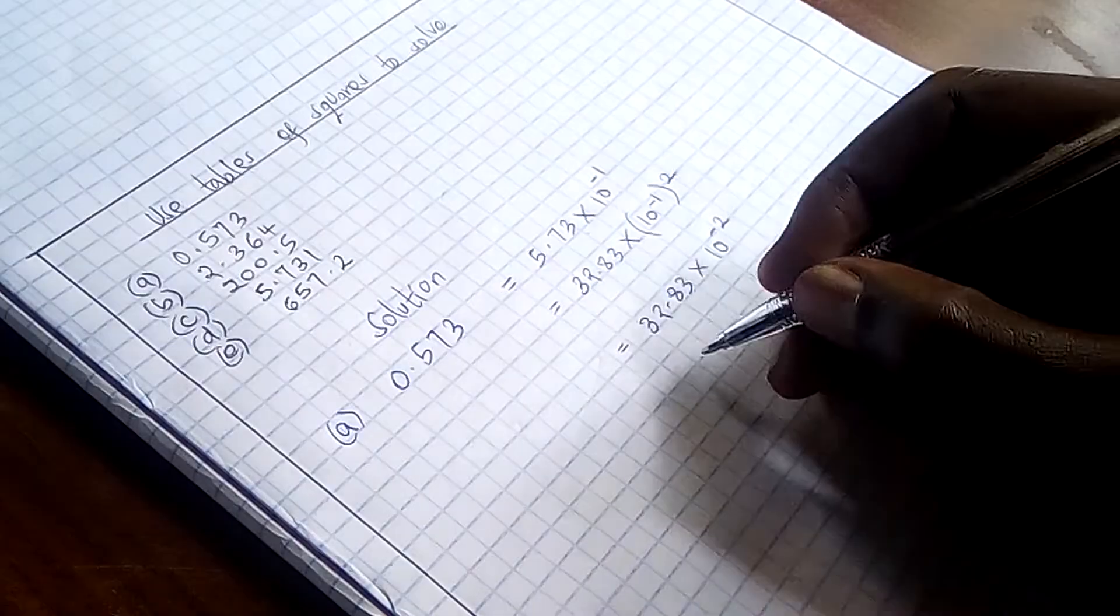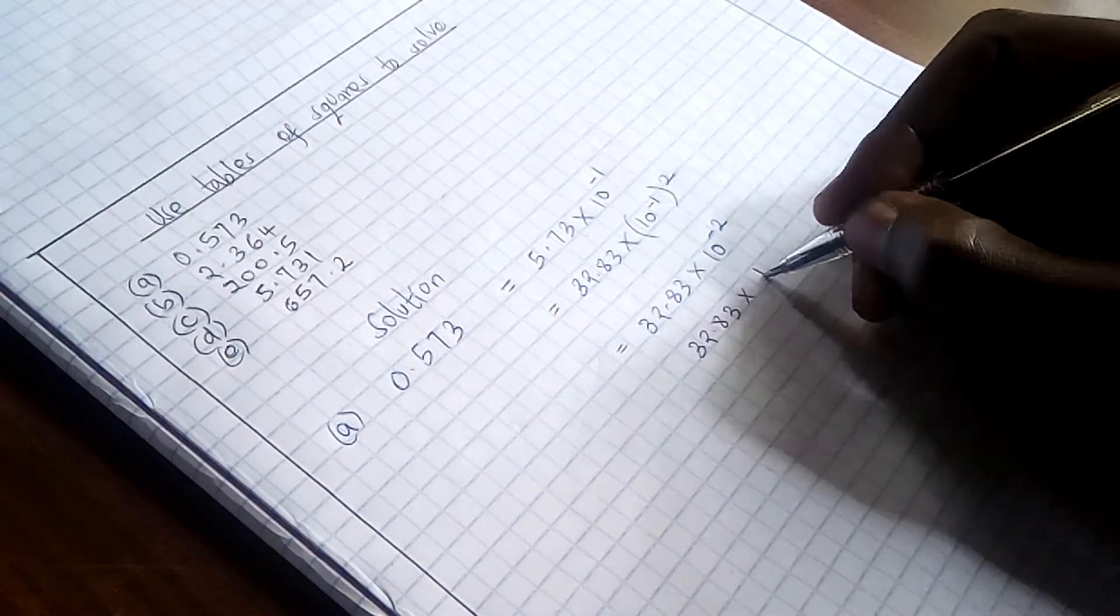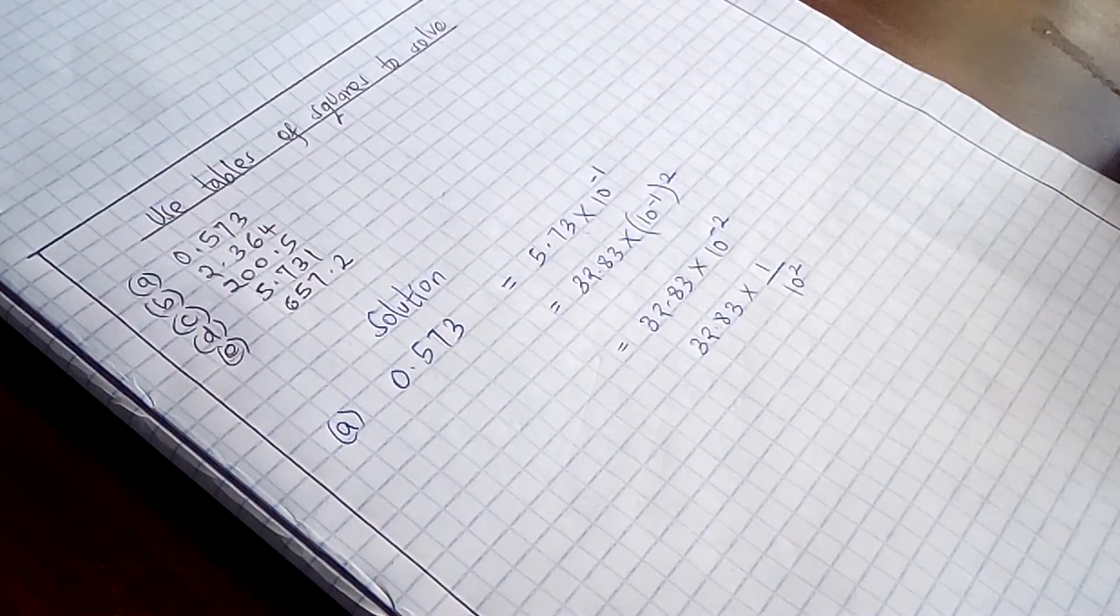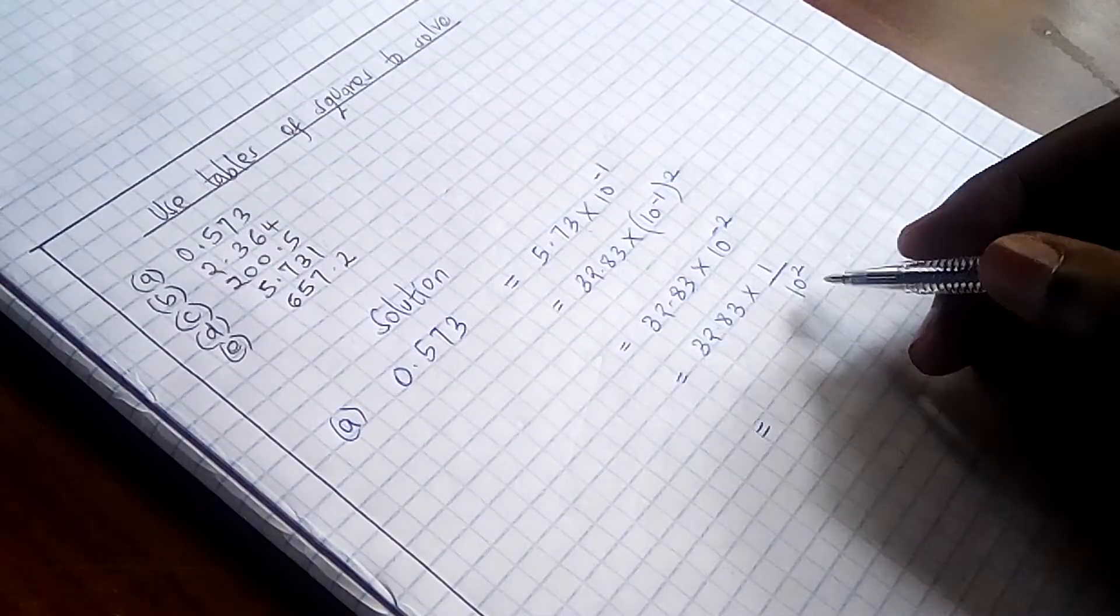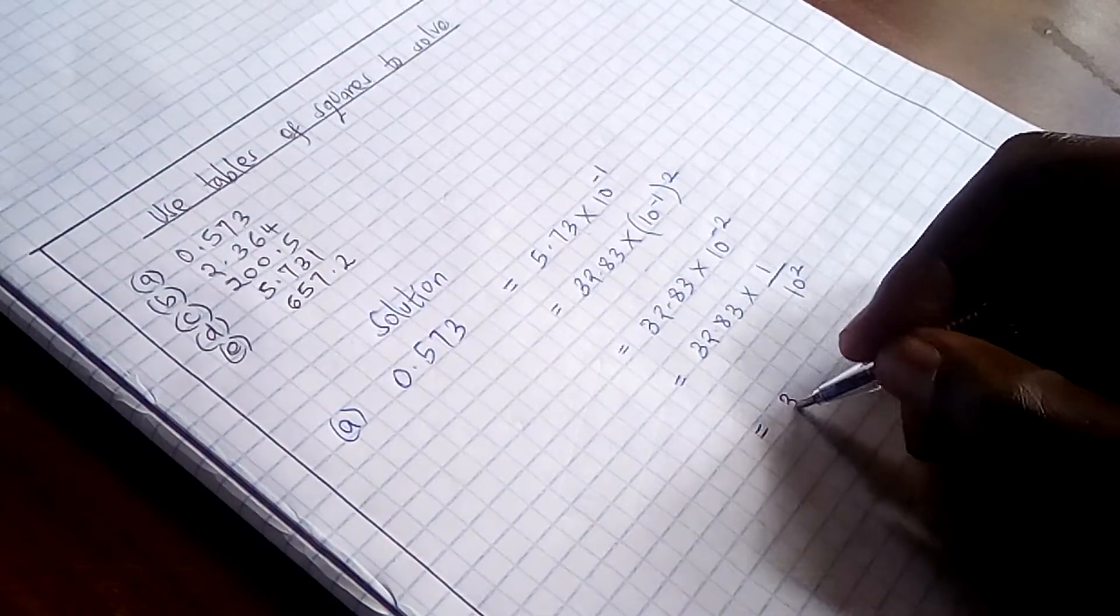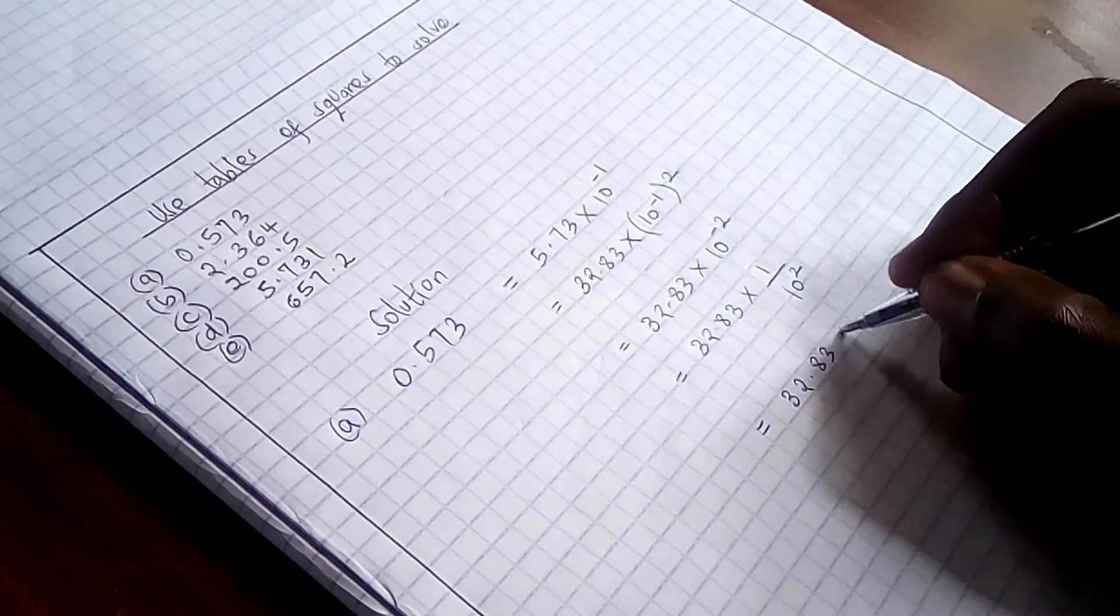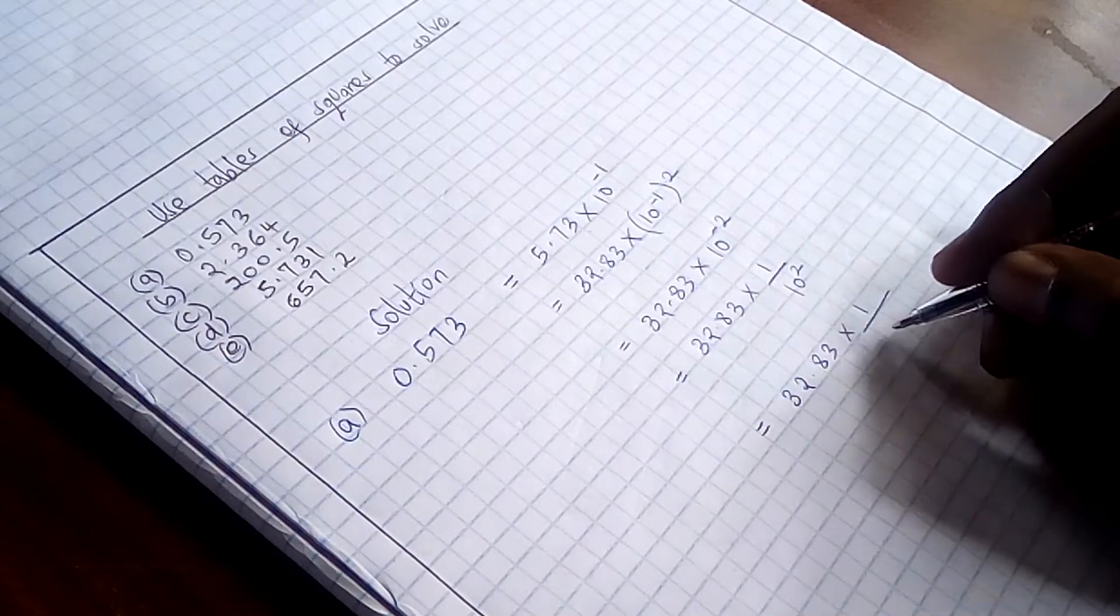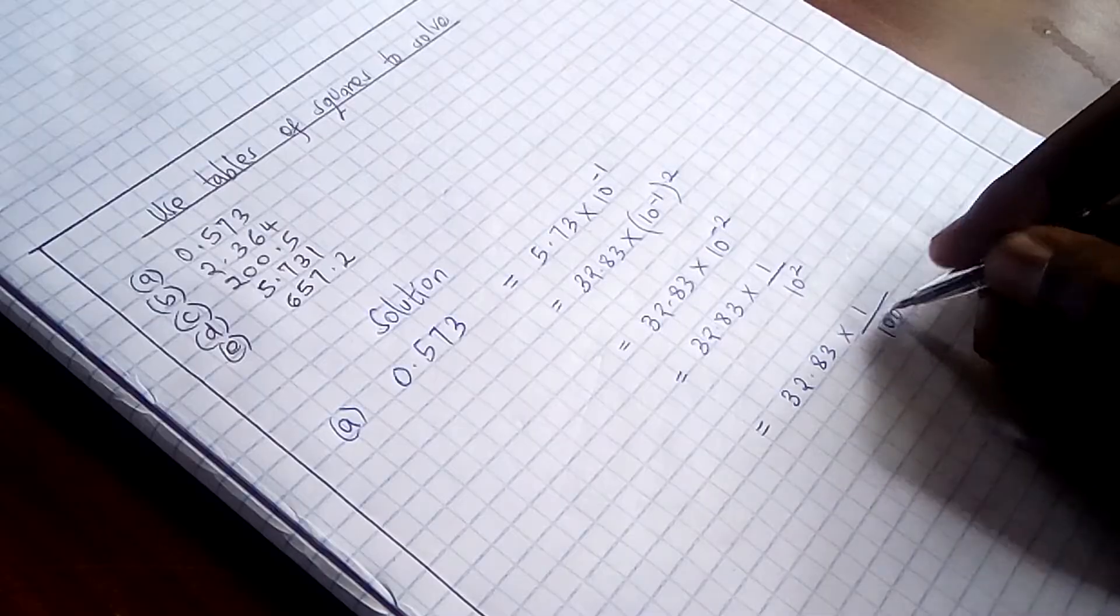And 10 raised to power negative 2 can as well be written as 1 over 10 squared. And this 1 over 10 squared, we have 10 times 10 is 100.